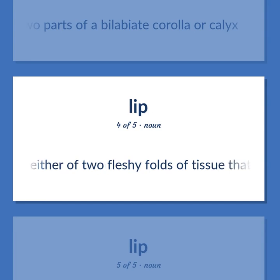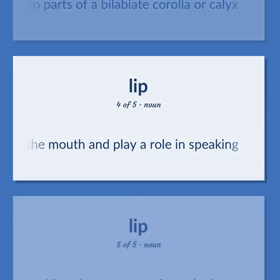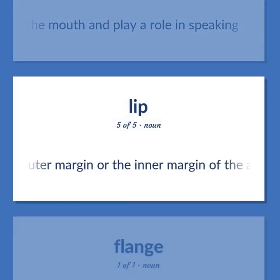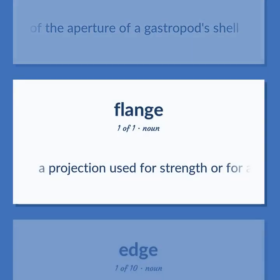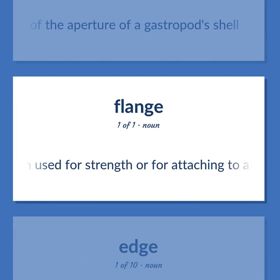LIP: In botany, either of the two parts of a bilabiate corolla or calyx. Either of two fleshy folds of tissue that surround the mouth and play a role in speaking. Either the outer margin or the inner margin of the aperture of a gastropod's shell. A projection used for strength or for attaching to another object.